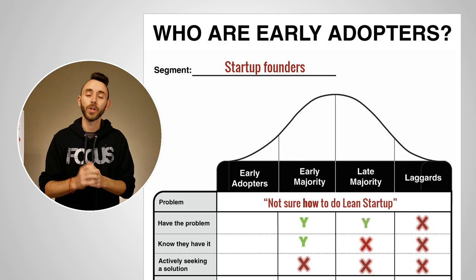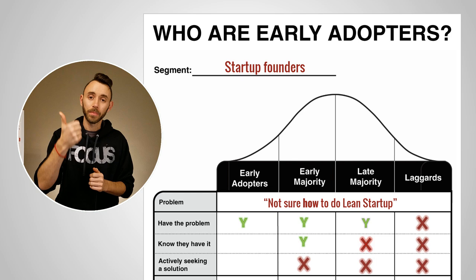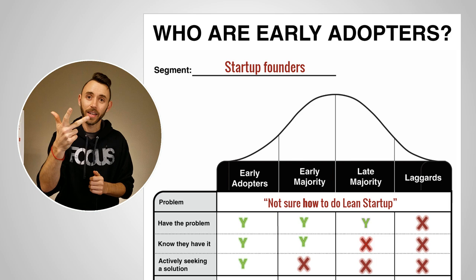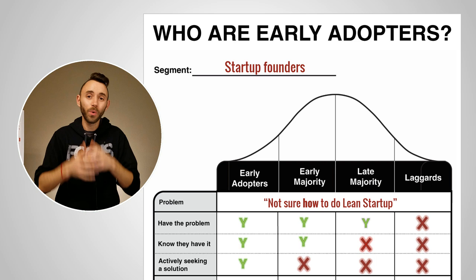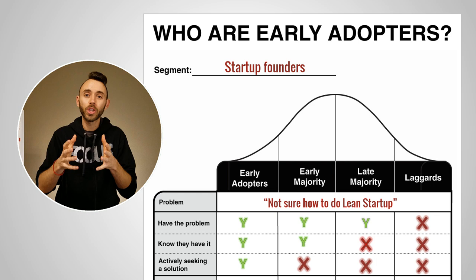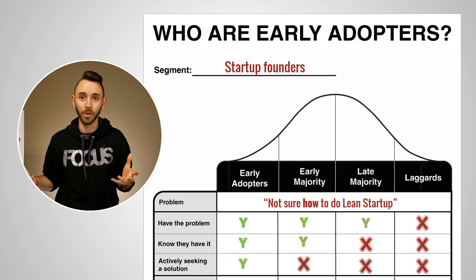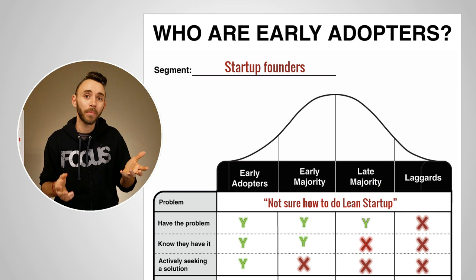An early adopter is someone who has the problem, knows they have the problem, and is actively seeking a solution. These are the people you want to target because they are so hungry for a solution that they're already trying to find one. They will take a risk on your new startup — something they've never heard of — because they're desperate for a solution. And when they find a solution they're excited about, they'll go tell other people, including the early majority. That person who didn't think there was a solution suddenly says, 'Oh my gosh, finally someone's built one' — and now you're on the path to achieving product market fit.